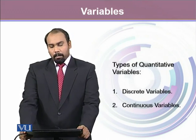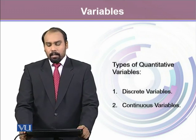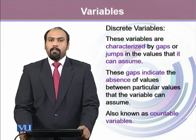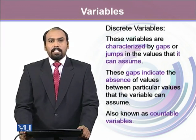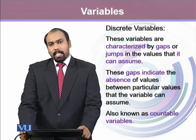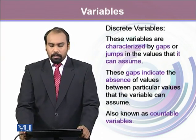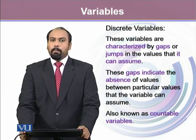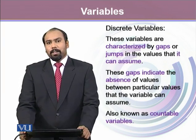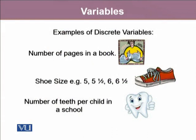Since quantitative variables are of two types — discrete and continuous — discrete variables are the ones that have gaps in their possible values. These gaps can also be known as jumps in value, where these jumps indicate the absence of values between particular possible values of the variable. Discrete variables are also known as countable variables. For example, the number of pages in a book could be one, two, three, four — but there is no observation between one and two, or two and three.